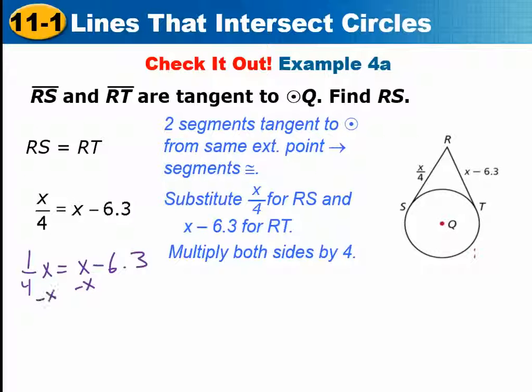And we would have 1 fourth X minus 1 X, which is the same as minus 3 fourths X equals negative 6.3. At that point, you might say, I'm going to change this to a decimal. And then I will divide both sides by negative 0.75. That's one way to do it.